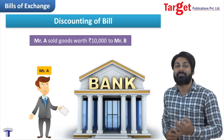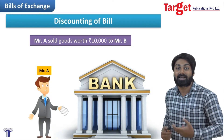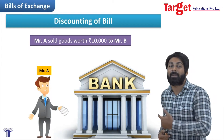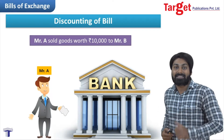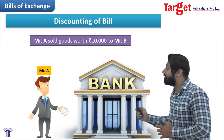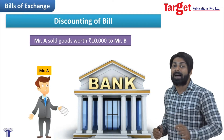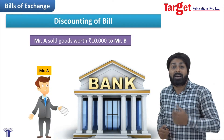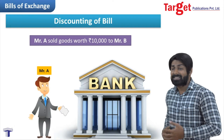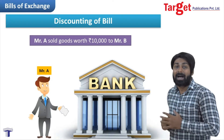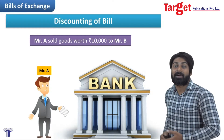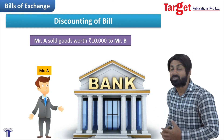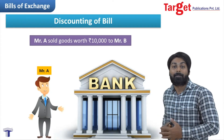The bank will deduct a certain amount because the bank will have to wait for three months. The drawee will make the payment to the bank after three months. So that's the reason the bank will make the payment to Mr. A, but bank will not give the entire amount — it will deduct a certain amount. For example, on a bill of 10,000, the bank will give 9,800.